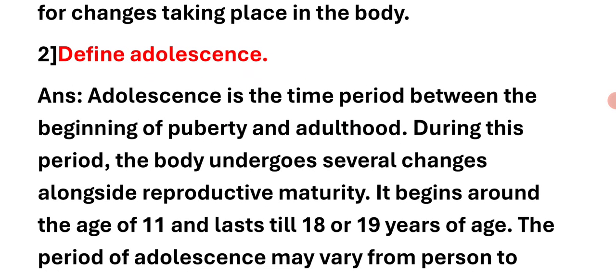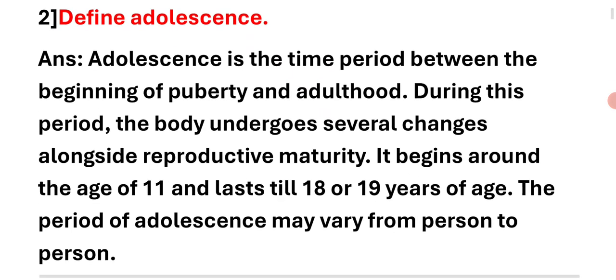Next question: Define adolescence. Adolescence is the time period between the beginning of puberty and adulthood. During this period, the body undergoes several changes alongside reproductive maturity. It begins around the age of 11 or 12 and lasts till 18 or 19 years of age. The period of adolescence may vary from person to person.